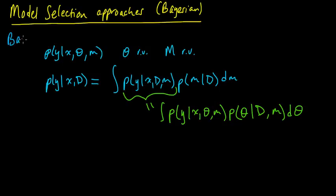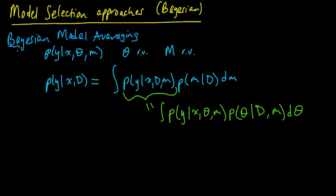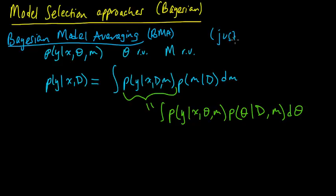If we were to use this, it's called Bayesian model averaging, or BMA. There's nothing really fancy about this — this is just being fully Bayesian.